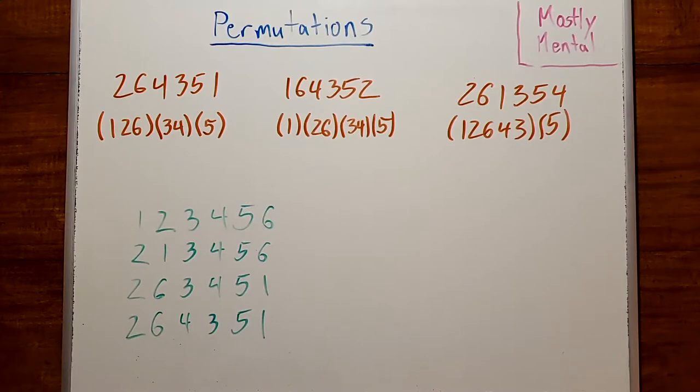Thinking in terms of even and odd permutations leads to some very interesting results in group theory. Look up the alternating group, if you're curious. But that strays a bit too far into algebra for my taste, so I'll leave it at that for now.